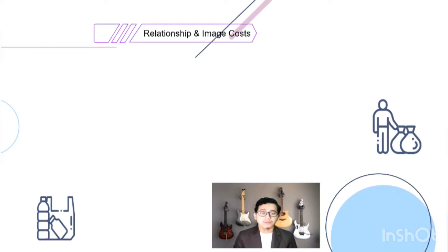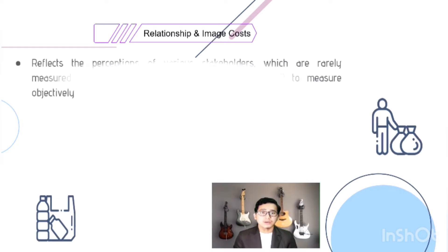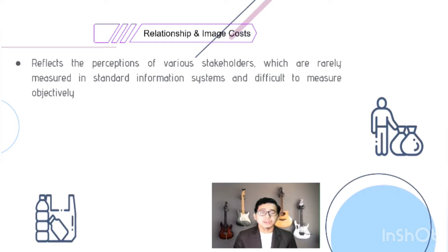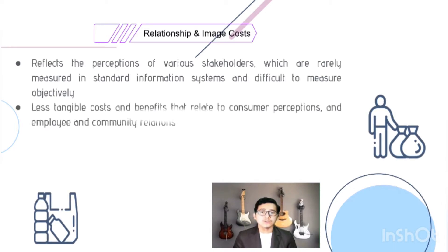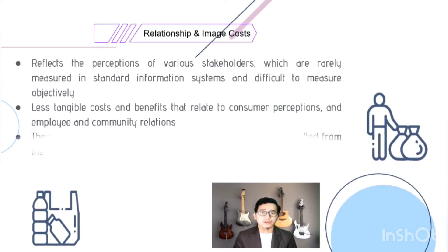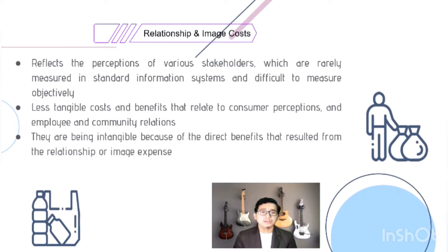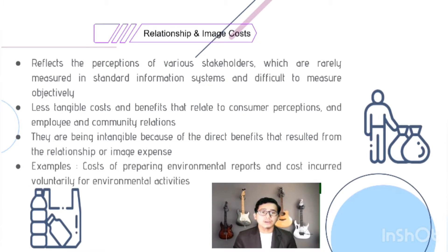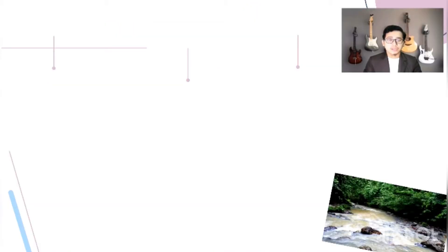The fourth tier is relationship and image costs. This cost reflects the perception of various stakeholders and is difficult to measure objectively using standard information systems. It includes less tangible costs and benefits relating to consumer perception and employee and community relations. An example is the cost of preparing environmental reports and costs incurred voluntarily for environmental activities.